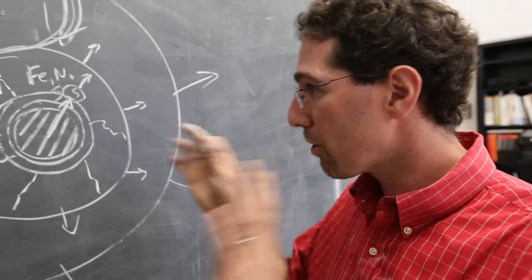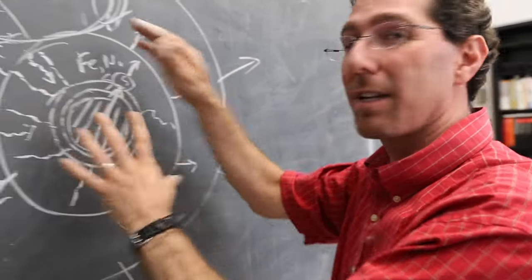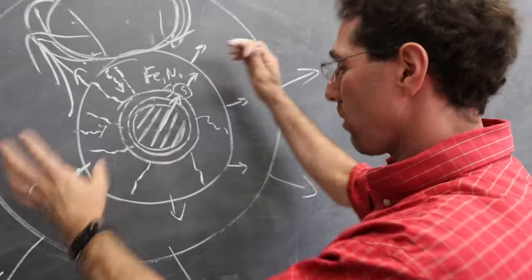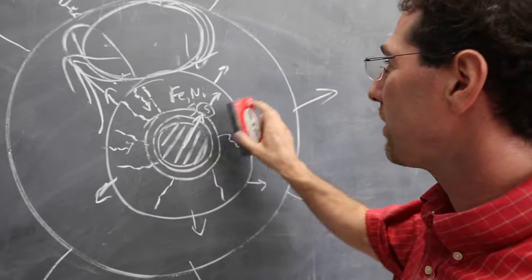So, crazy weird planet, onion structure, inner core growing outwards. Now, where does the magnetic field come in?